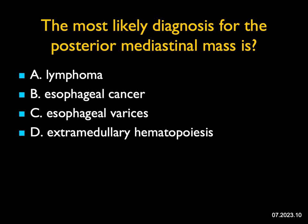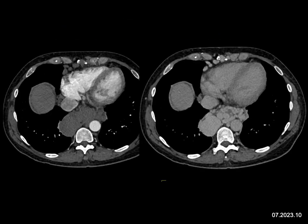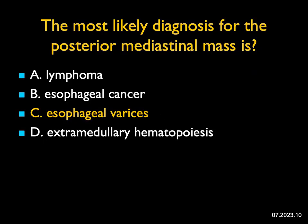The most likely diagnosis for this posterior mediastinal mass — on the arterial phase images on the left, you can go through a differential of a soft tissue mass. Remember, always be careful with arterial phase imaging, particularly in a cirrhotic liver. But when you look at the venous phase image on the right, you see we're looking at large varices. This is not esophageal cancer, not lymphoma, not extramedullary hematopoiesis. These are paraesophageal and paraaortic masses that are lobulated and enhance — a classic example of esophageal varices.